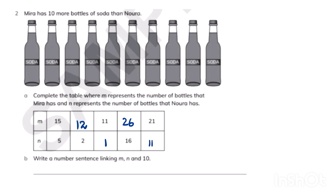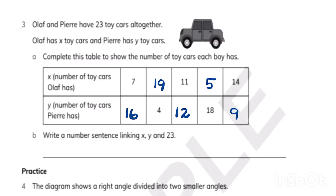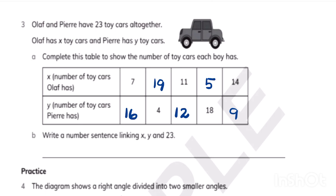The number sentence is M minus N equals 10. For example, 15 minus 5 equals 10, or 12 minus 2 equals 10. Similarly, part 3: the number sentence is X plus Y equals 23. Whatever value of X is given, add enough to make 23. Like 7 plus 16 is 23, 19 plus 4 is 23, and when 11 is given, write 12 to make it 23.